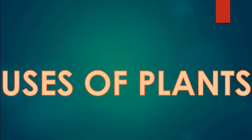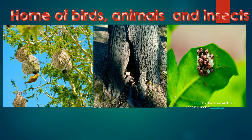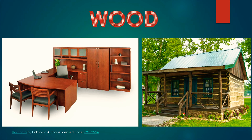Plants are very useful to us. Plants give us food and other useful things. Plants are home to many birds, animals and insects. Plants help in making beautiful homes for birds, animals and even for humans. We can build homes and make furniture like tables, chairs and beds from the wood given by trees.